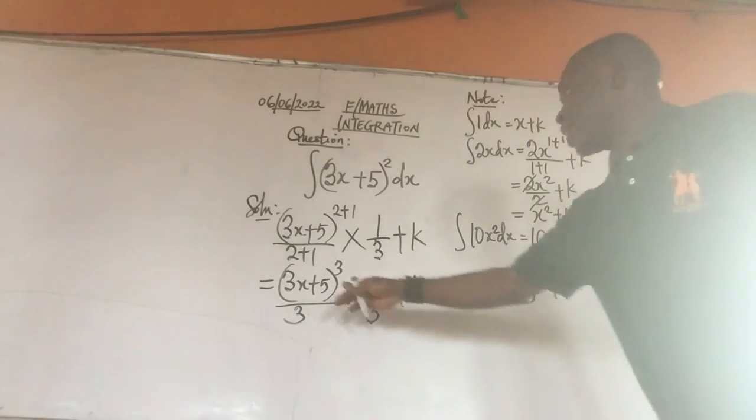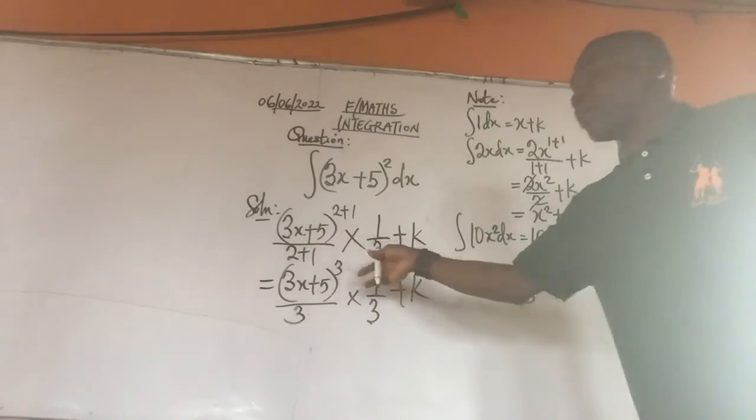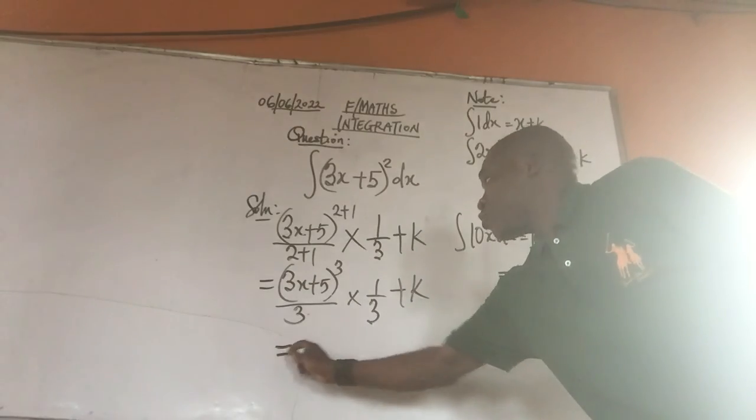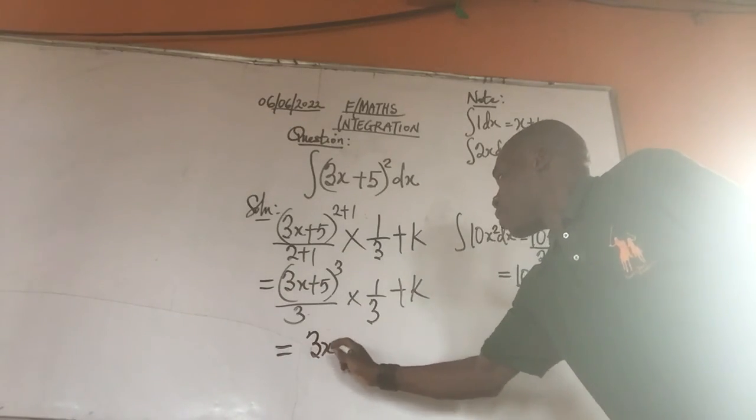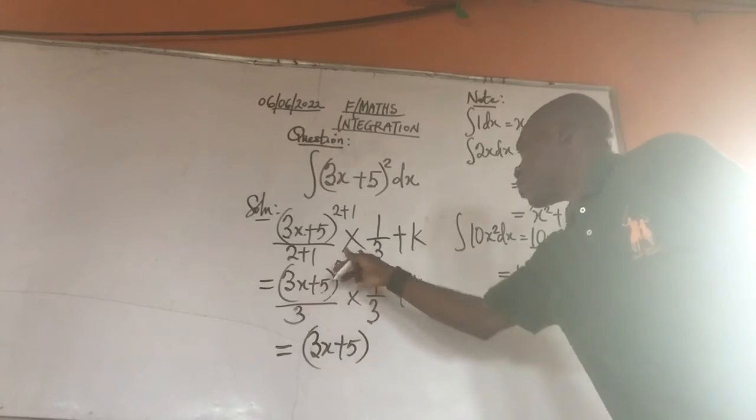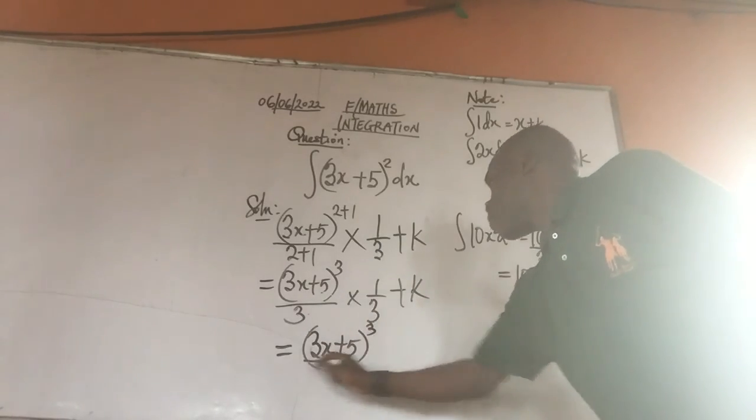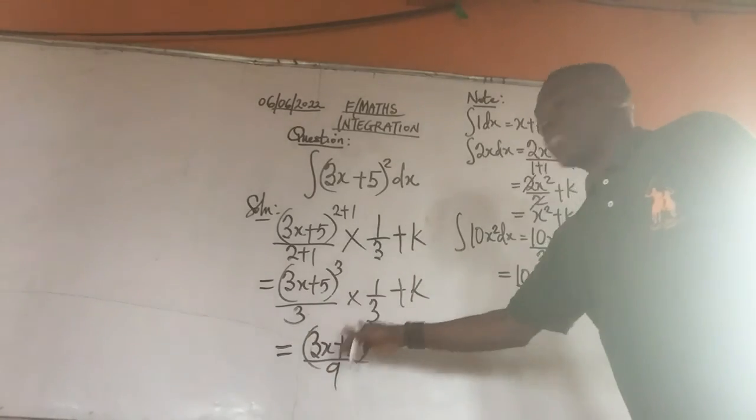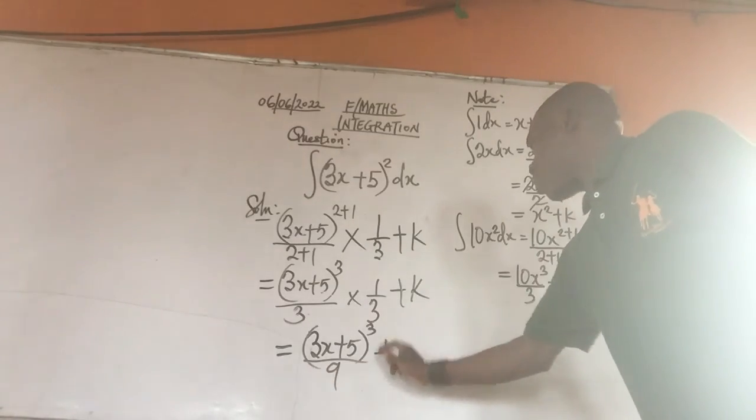That will give us 9. Then the whole of this here will give us the same thing as this, which is now going to give us 3x plus 5 raised to the power of 3 over 9. That is 3 times 3, 9. Then plus k.